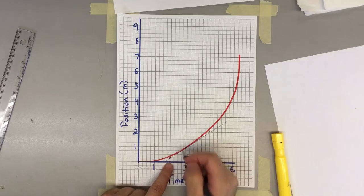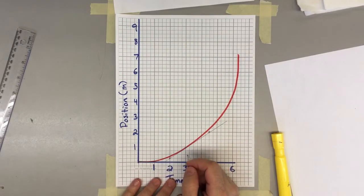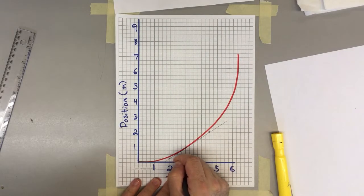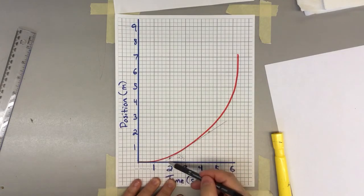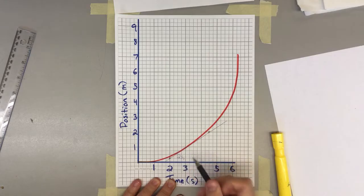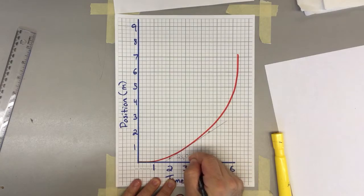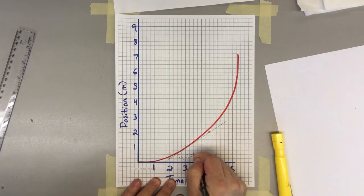If we're taking a look at our first spot, we can see that that's going to be at two seconds. And it's one fourth of the way up to one. So it's going to be 0.25 meters.